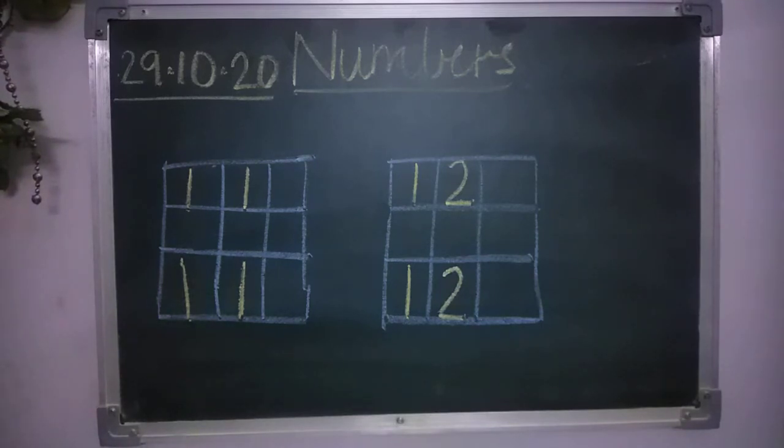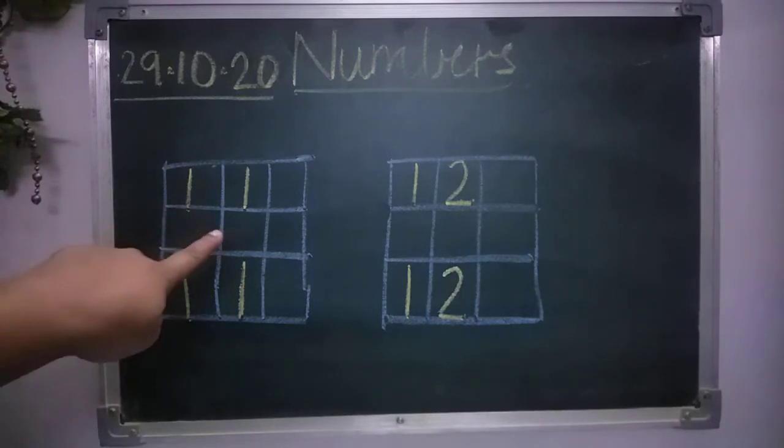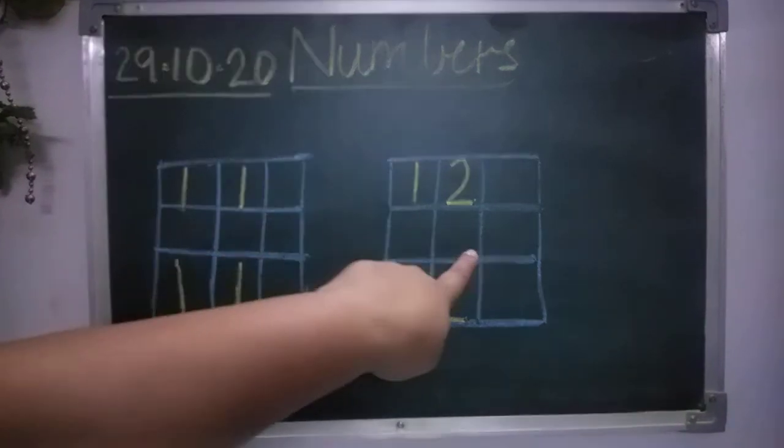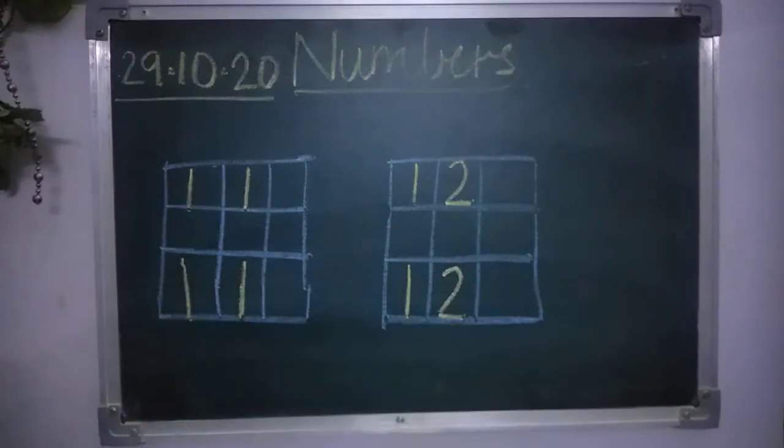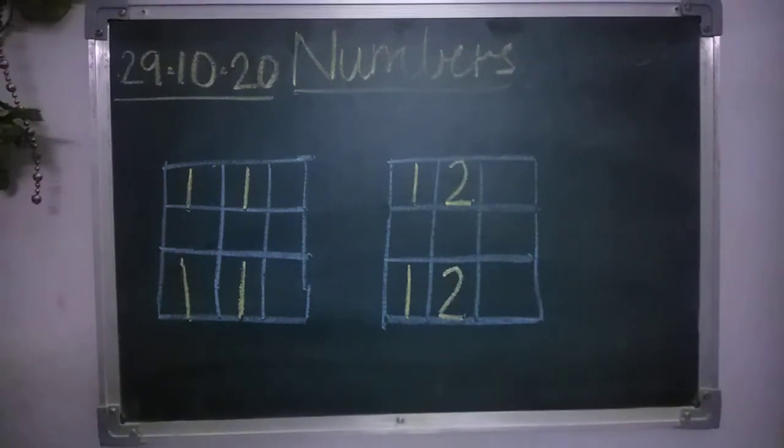So the two new numbers that we are going to do today is number 11 and number 12. To abhi ek baar jaldi se sab meri saath snapping karein ga. Meri saath count karein ga 12 tak. Okay? One, two, three, four, five, six, seven, eight, nine, ten, eleven, twelve. Shabash yaar. Bahut ache se kara.